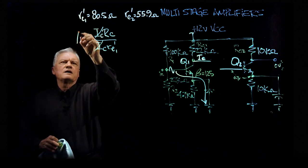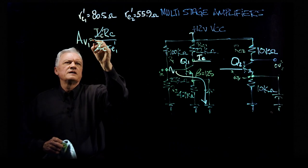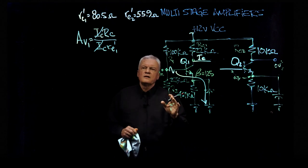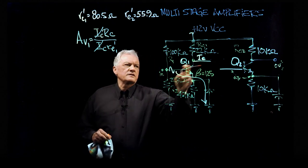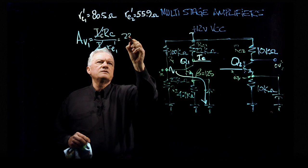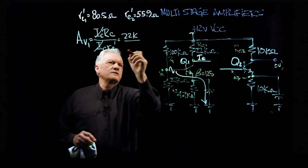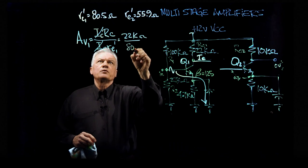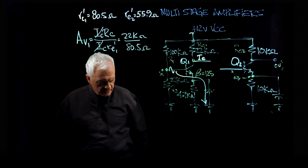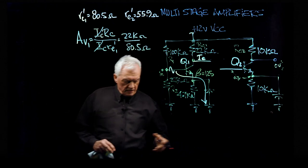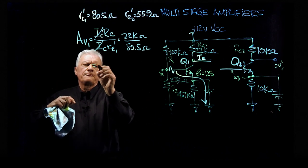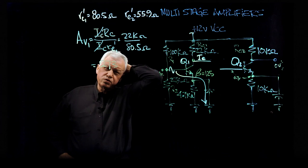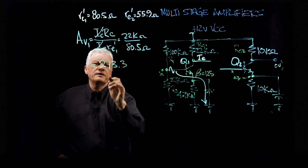If I look at ICRC, which is the output, over ICRE prime, then these two currents will cancel. And so the gain of this amplifier with no load is simply the value of the RC circuit, 22K, so we have 22K ohms divided by RE1 prime, which was 80.5 ohms. If you do that particular math, you come out with a number of 273.